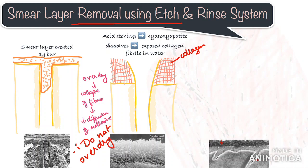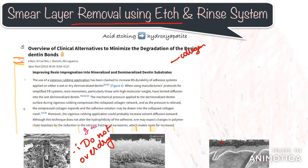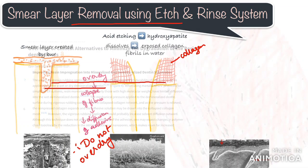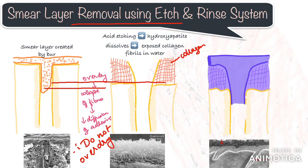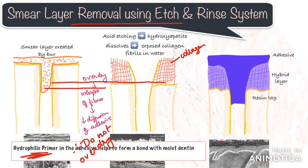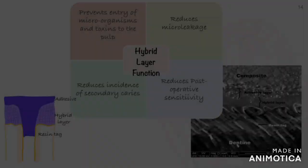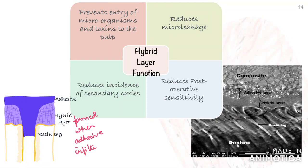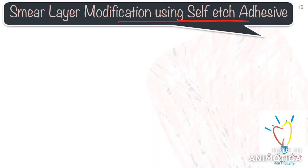After rinsing the etchant, we dry the tooth surface, but if we over-dry the etched dentine surface, it leads to collapse of the collagen fibers, which restricts the diffusion of resin into the dentine. Similarly, over-wet conditions result in lower bond strengths due to dilution of the adhesive. It is therefore recommended to blot excess water with a cotton pellet, disposable brush, or tissue paper. Recent studies suggest that dentine moisture may not be critical if the adhesive is vigorously rubbed onto the dentine surface.